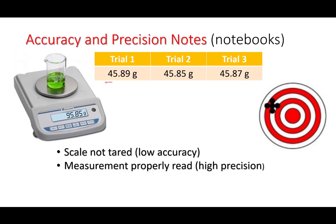Here, our scale is not tared or zeroed, so we have very low accuracy again. We're reading 45.9 approximately when it should be 95.9. However, these are very precise measurements because they're very repeatable. Even though the true value or the average of the trials is far from the true value, they are consistent.